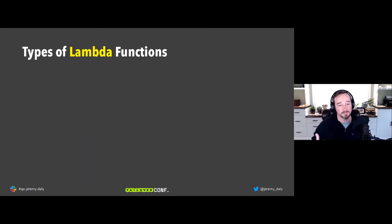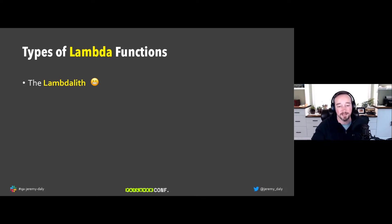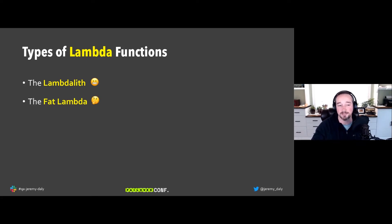There are three types of Lambda functions. The first is the Lambda Lift — essentially the AWS version of the monolith, where the entire application runs inside a single Lambda function. This is often a lift-and-shift approach: take a Flask app or Express.js app and put it into Lambda. Events are typically synchronous, through API Gateway or an Application Load Balancer.